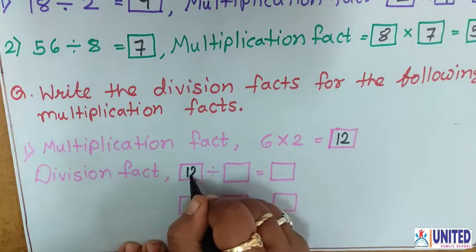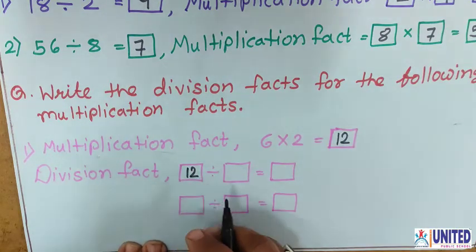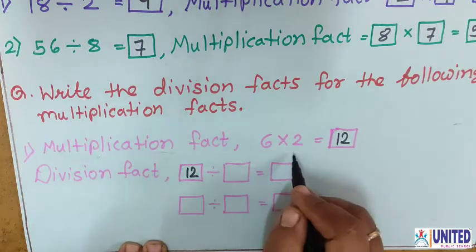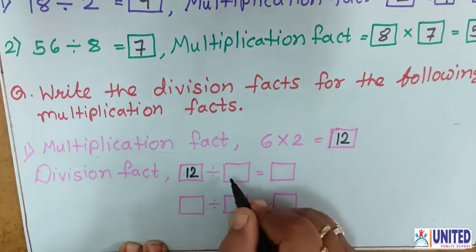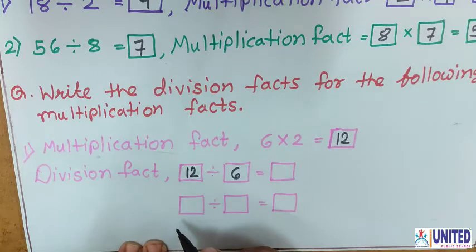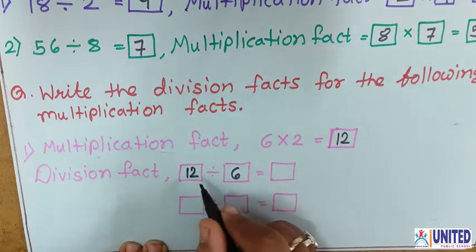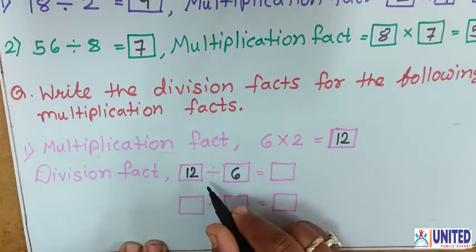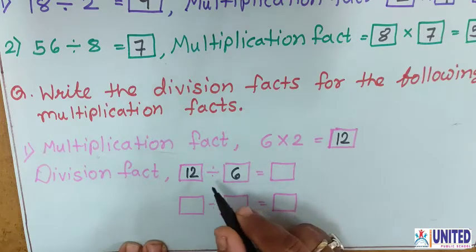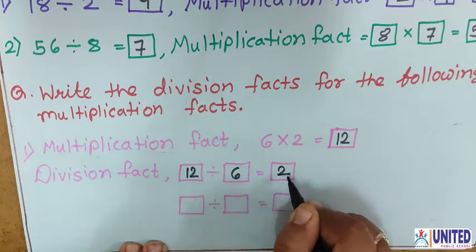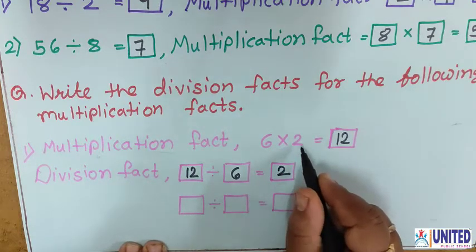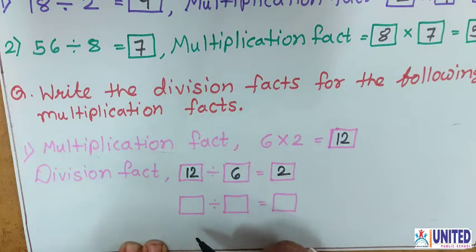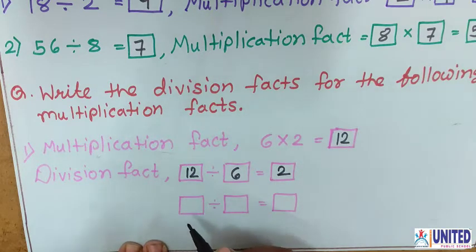Now how can we write the division fact? Whatever the product comes — what is the product here? 12. So I can write 12 as the dividend. Now you can take any number from the two factors. So first, I take 6 as the divisor. 12 divided by 6 — speak out the 6 times table until 12 comes. 6 twos are — what is the number? 2. You can see the number is here.